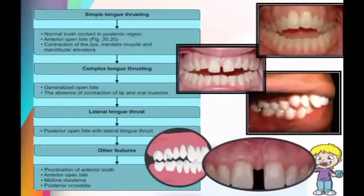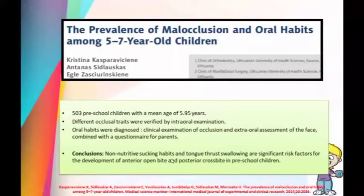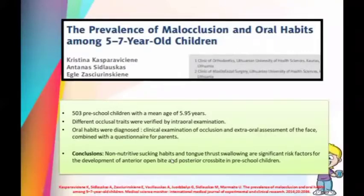In lateral tongue thrust, posterior crossbite is present. Other features include proclination of anterior teeth and anterior open bite. Nonnutritive sucking habits and tongue thrust swallowing are significant risk factors for the development of posterior crossbite in preschool children.